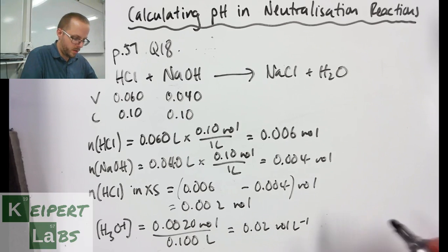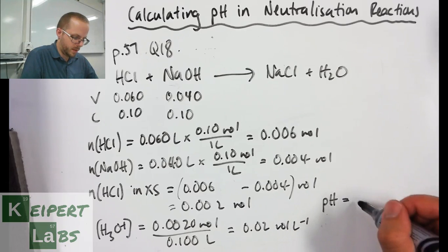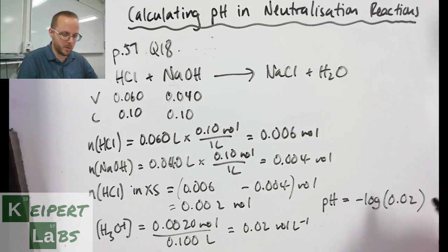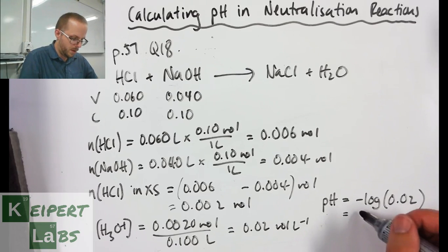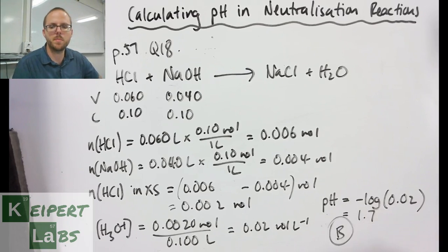pH is equal to minus log of this value, 0.02 moles per litre, which gives us a value of 1.7, which means we would answer B for this particular question. So you can see that in each question they were quite similar.